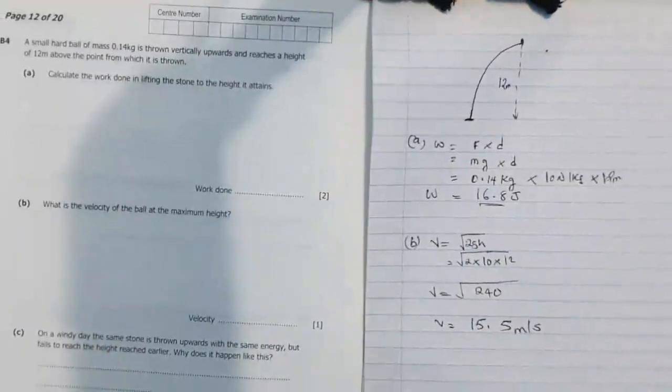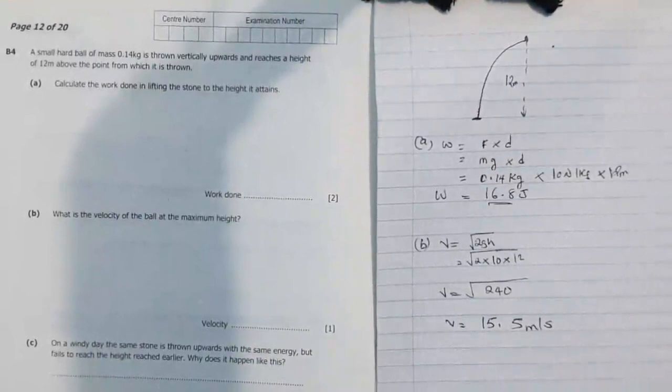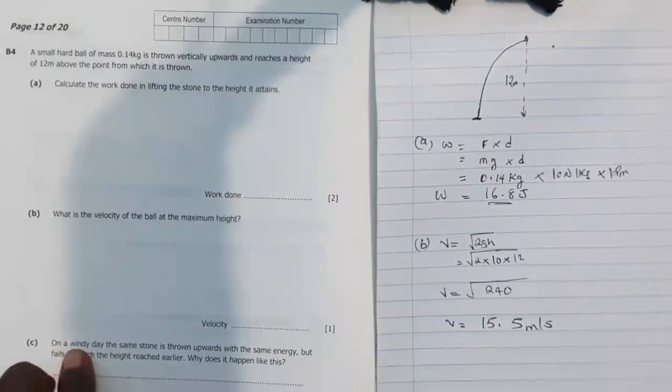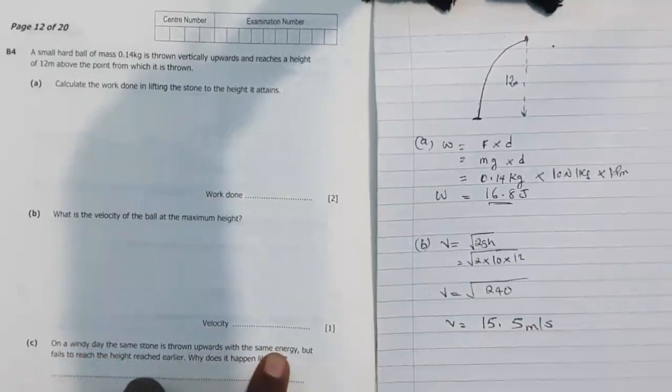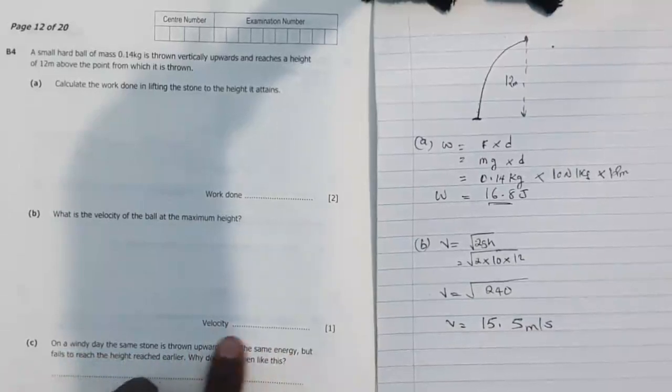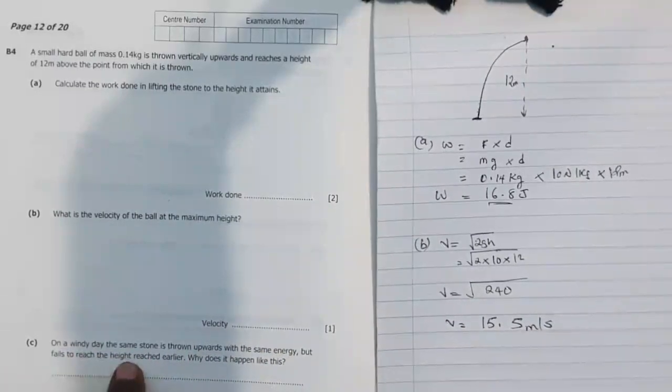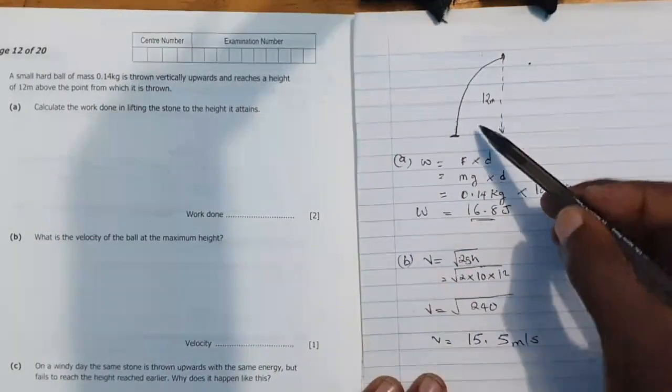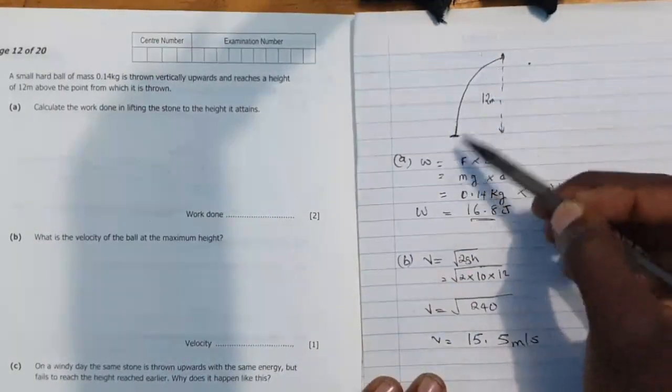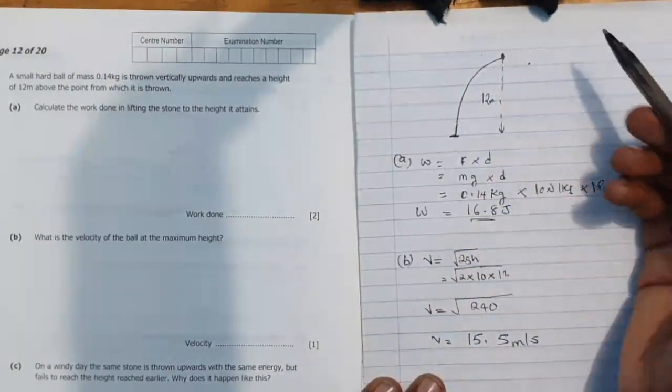Okay, then another question says on a windy day the same stone is thrown upward with the same energy but fails to reach the highest reached area. Why does it happen like this? So another day and that day is windy, they try to throw the same stone, they discover that it's not reaching 12 meters. Why is that?